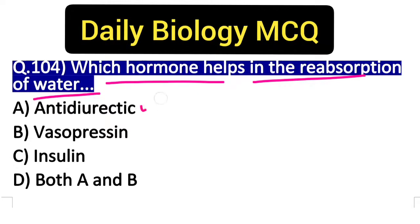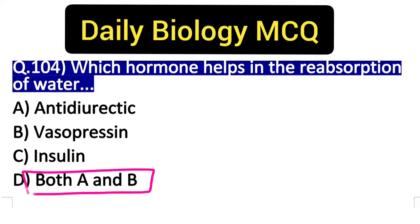Options are: A) Antidiuretic, B) Vasopressin, C) Insulin, and D) Both A and B. Here is the right answer, option D, both A and B, because antidiuretic hormone is another name for vasopressin.